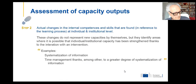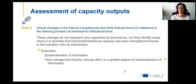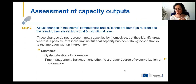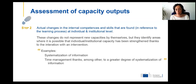Step two is on the assessment of capacity outputs — changes in internal competences and skills found at both individual and institutional level. When these outputs are associated with specific support actions, we call them direct outputs, such as improved knowledge in a specific area or improved systematization of information. We also have induced outputs — second-order or indirect consequences of the support intervention — such as new functions fulfilled by upgraded staff, or changes in institutional structure like the creation of a monitoring and evaluation unit.